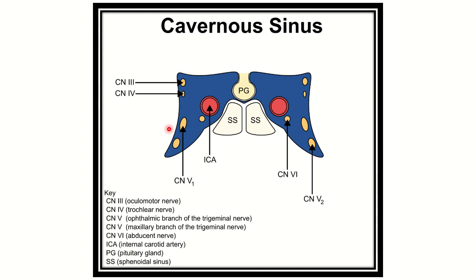On the lateral wall of the cavernous sinus, we can see cranial nerves three, four, five-one, and five-two. Cranial nerve three is the oculomotor nerve, cranial nerve four is the trochlear nerve, cranial nerve five-one is the ophthalmic branch of the trigeminal nerve, and cranial nerve five-two is the maxillary division of the trigeminal nerve. These structures are present within the lateral wall of the cavernous sinus.